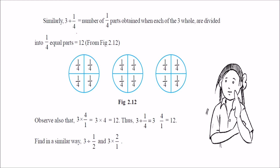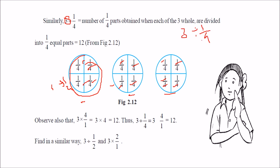Again, if we want to divide 3 by 1 by 4: we have 3 circles and we divide each into 1 by 4, meaning 4 divisions per circle. Counting all parts: 1, 2, 3, 4, 5, 6, 7, 8, 9, 10, 11, 12 — these are 12 parts. So dividing 3 by 1 by 4 gives us 12 parts. How? We write 3 by 1, change the division to multiplication, and take the reciprocal: 4 by 1, giving us 12.